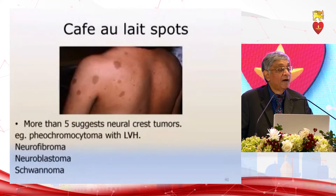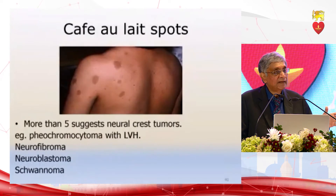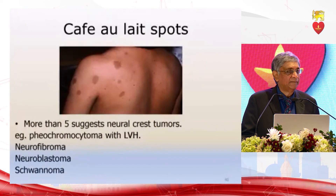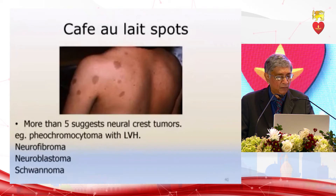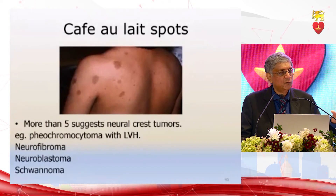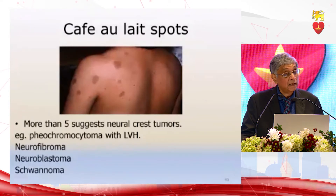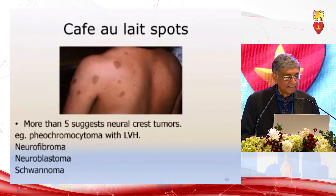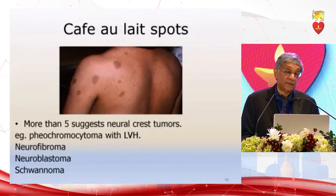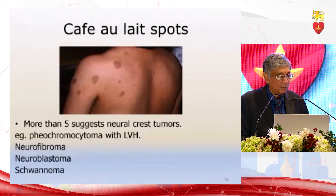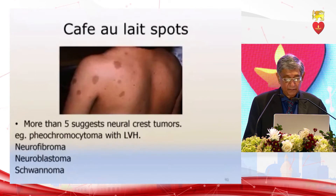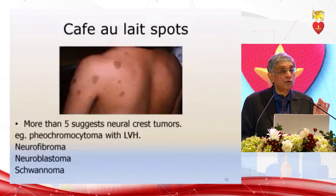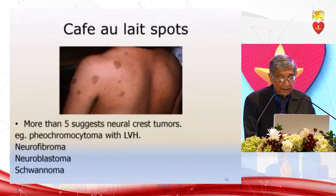Café-au-lait spots — in white-skinned people it is a light brown, but in dark-skinned people it is actually darker. Anything less than one or two is of no pathological significance. More than five spots indicates associated neural crest tumors, and we are particularly interested in phaeochromocytoma, which is a neural crest tumor. But there are other neural crest tumors — neurofibromas, neuroblastomas, schwannomas — and therefore detection of café-au-lait spots is important.